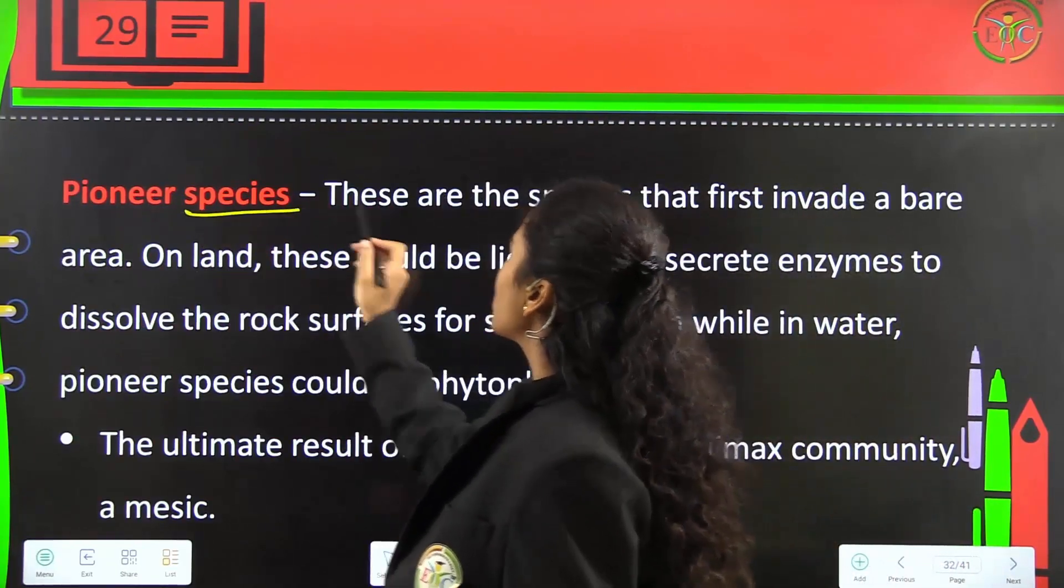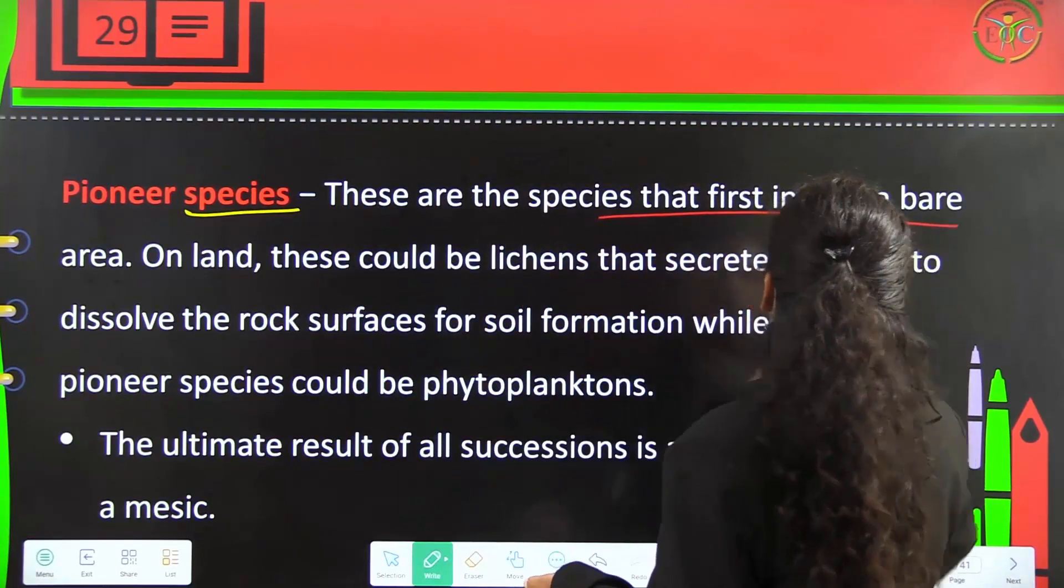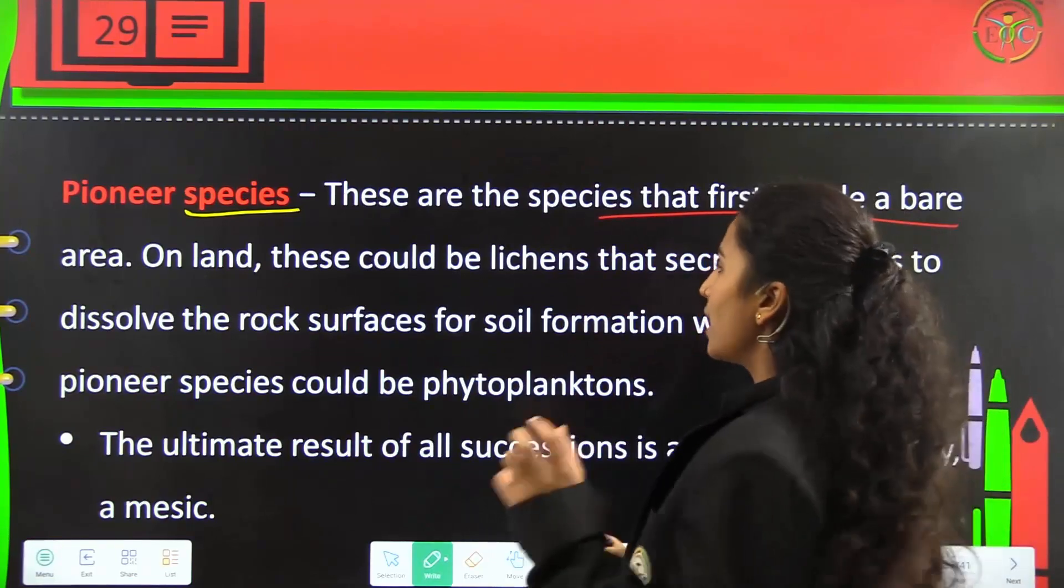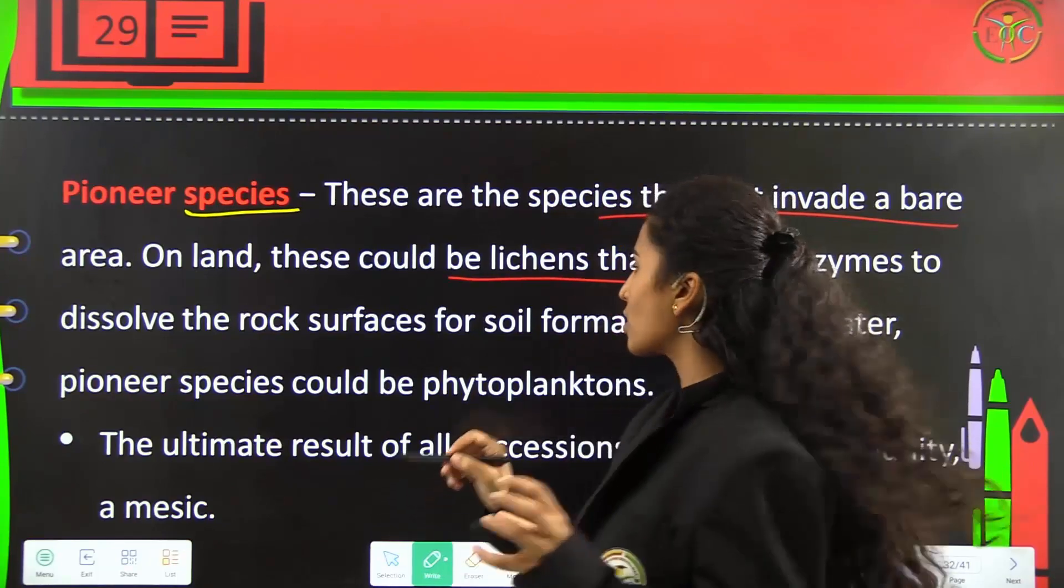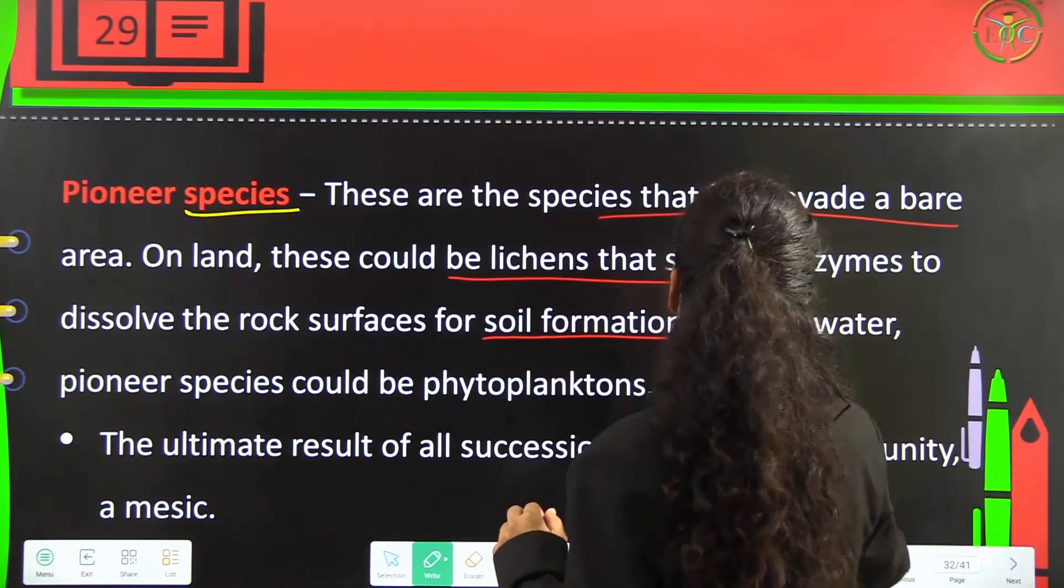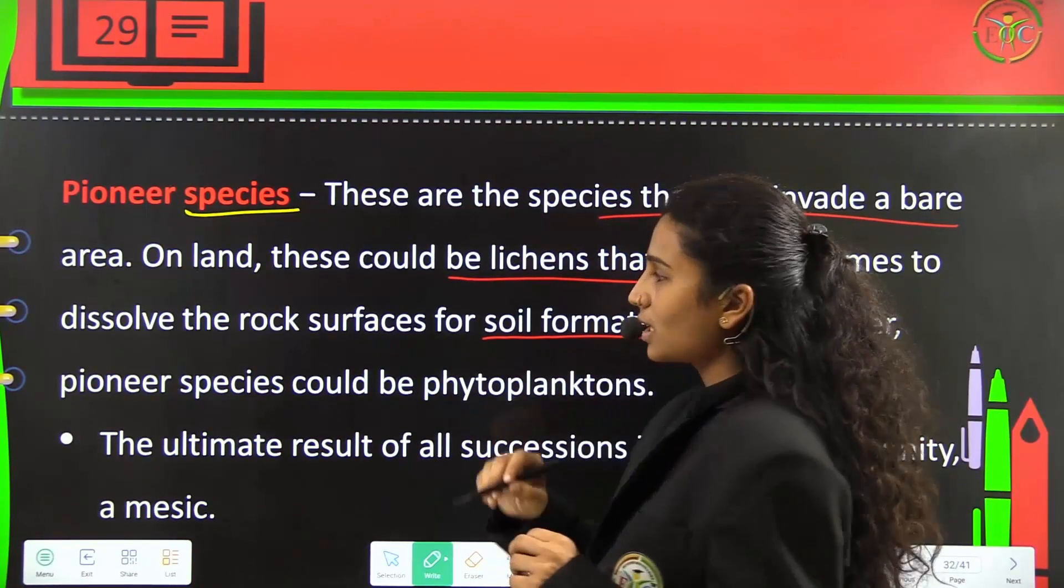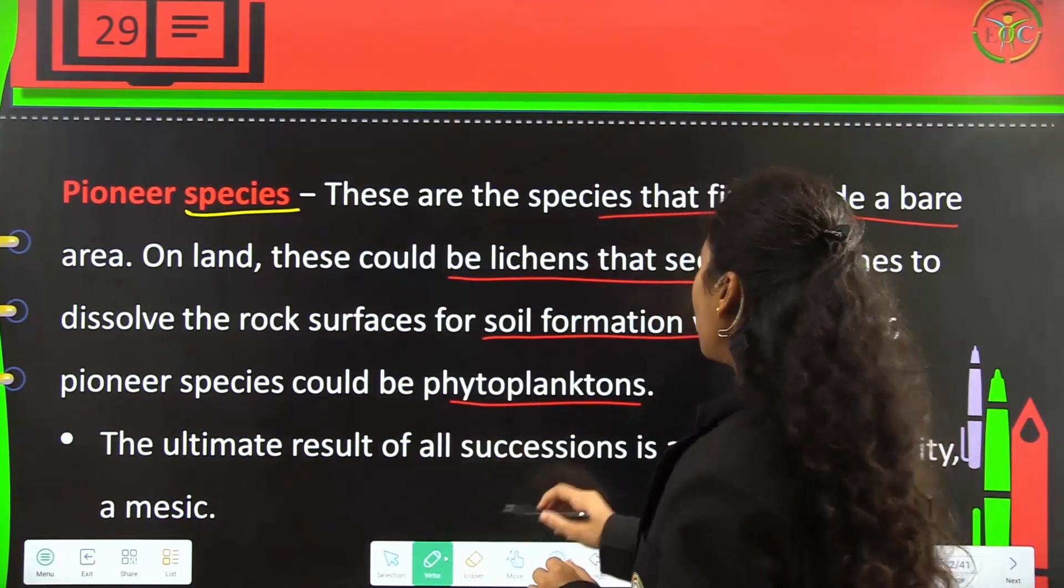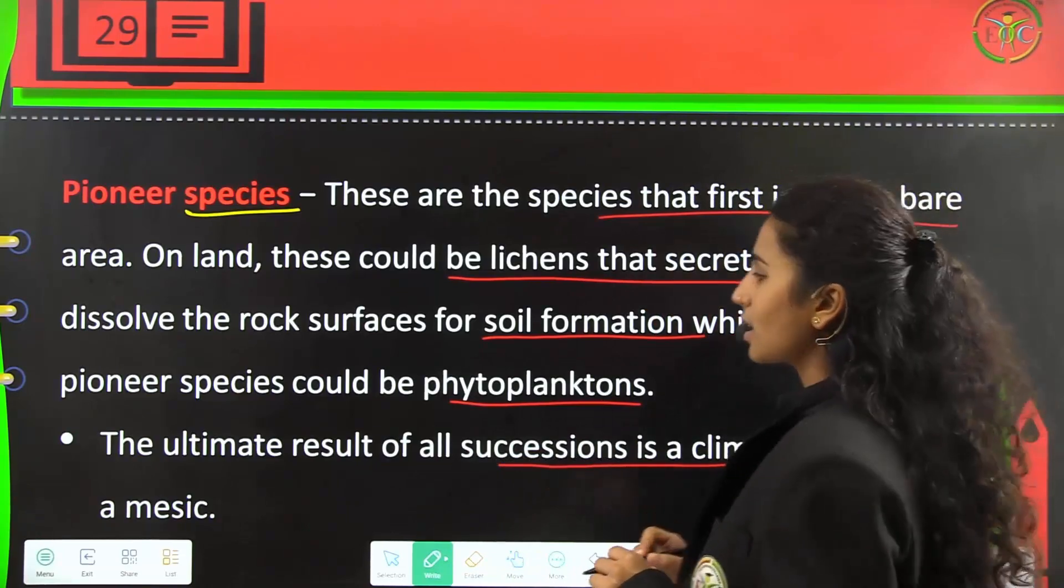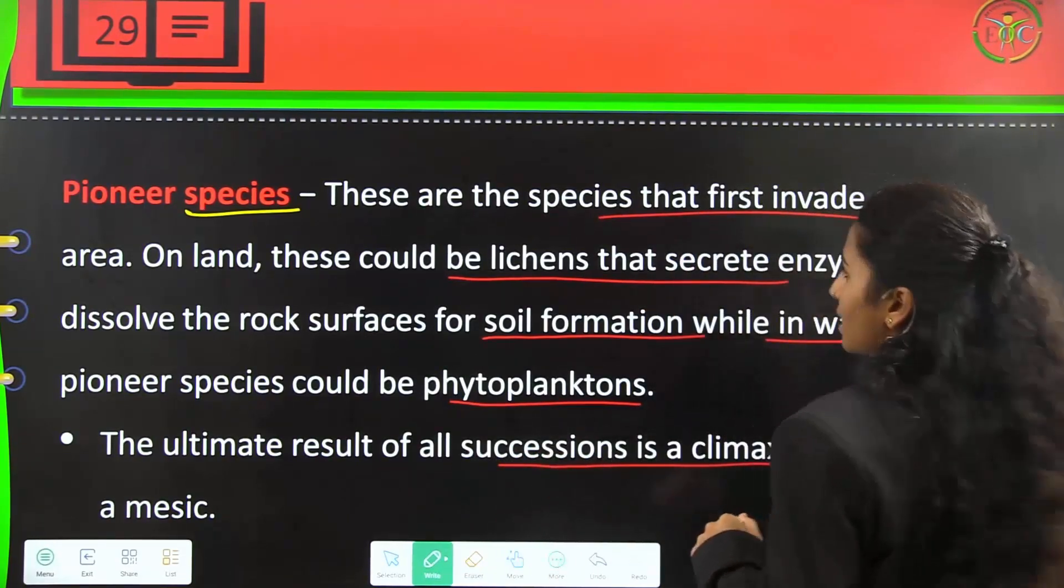Pioneer species are the species which first invade a bare area. On land these could be lichens which secrete enzymes to dissolve rock surfaces for soil formation, while in water pioneer species could be phytoplanktons. The ultimate result of all succession is a climax community which is mesic.